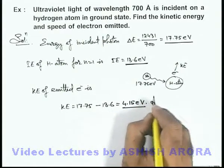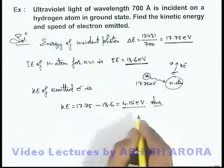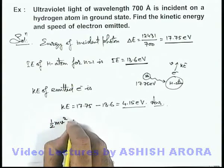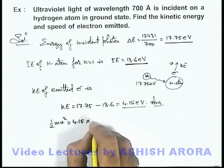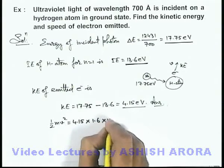This is the kinetic energy of the electron emitted, which is one answer of this problem. And the speed of electron can be easily calculated by equating it to half mv squared as 4.15 electron volts. We can convert into joules by multiplying it with 1.6 × 10⁻¹⁹.